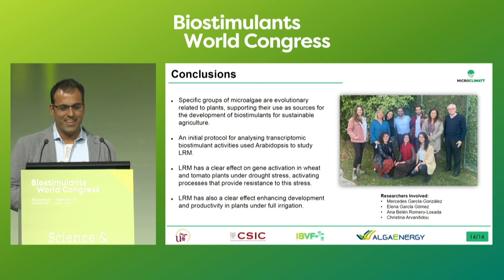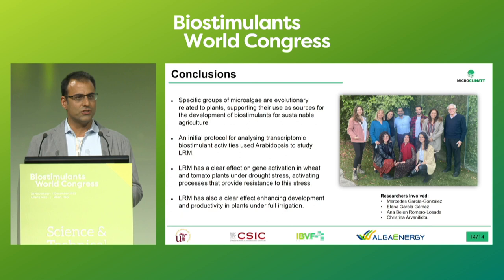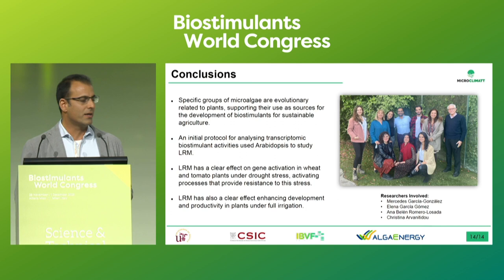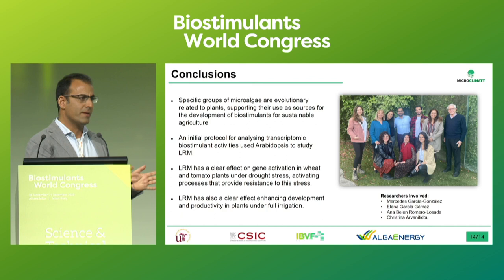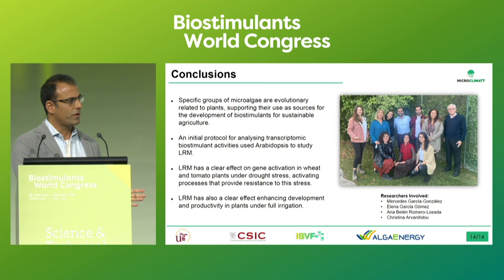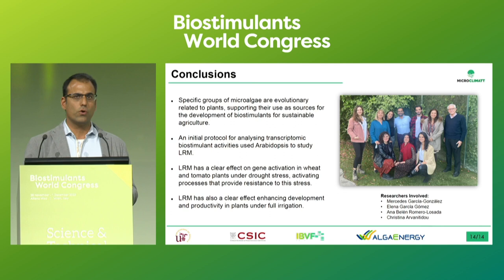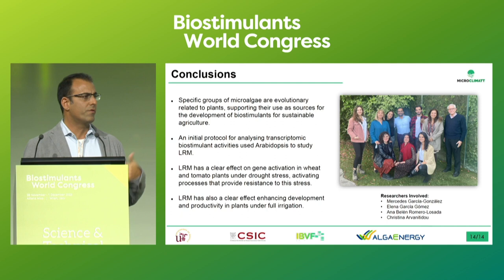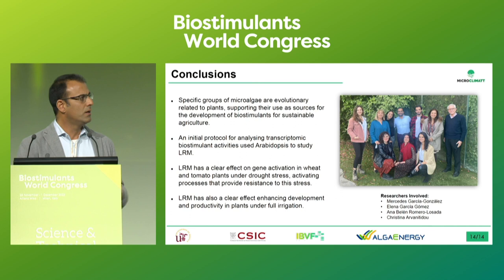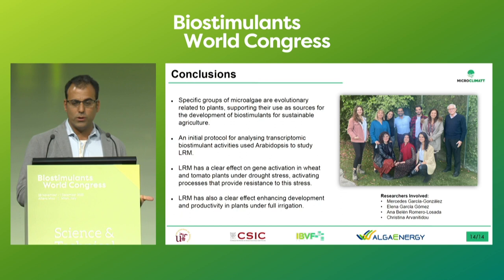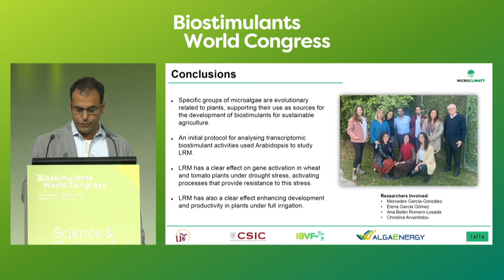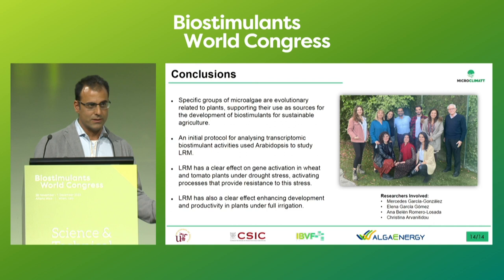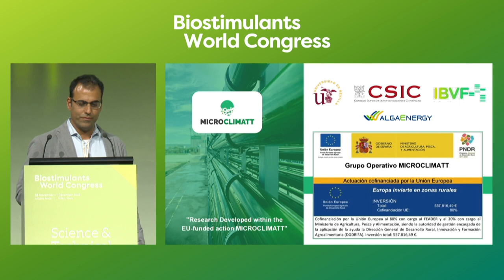These are the conclusions. First, plants and microalgae are not very different — there are two groups of microalgae, Chlorophytes and Streptophytes, that are very close relatives to land plants. We developed a protocol that combines an initial study in Arabidopsis to guide the next stage, where we study what happens in plants of economical interest — specifically wheat and tomato. In all three plants, we saw a clear effect at the transcriptomic level that translated into a phenotype. The responses are not exactly the same — different strategies to cope with stress are activated — but each plant uses its own strategy to overcome the stress. We also showed that the biostimulant increases grain production in wheat.